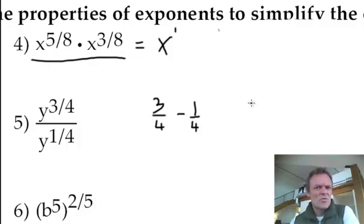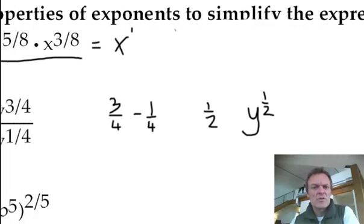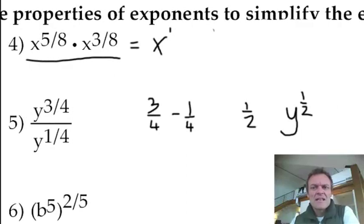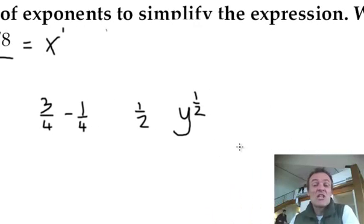Which is 2/4, which will simplify to 1/2. So this is the answer: y to the 1/2. Now let's see if it wants anything else. With positive exponents, that's it. I didn't know if it wanted me to change it to radical. In other words, if I wanted it in radical notation, remember y to the 1/2 is the square root of y, but it's not asking for that.